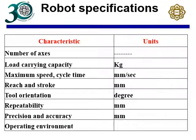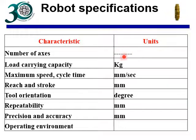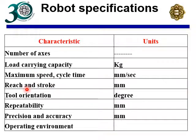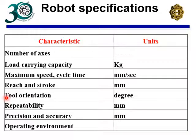When you buy any robot, what specifications should you look for? The key criteria include: number of axes or degrees of freedom, payload capacity, maximum speed, maximum stroke length or reach, and tool orientation — whether it needs to be perpendicular or with some additional degrees of freedom.